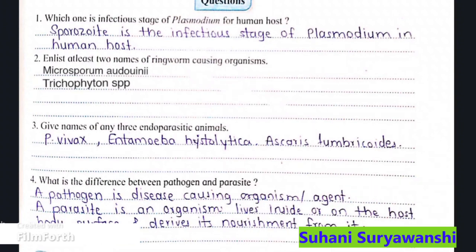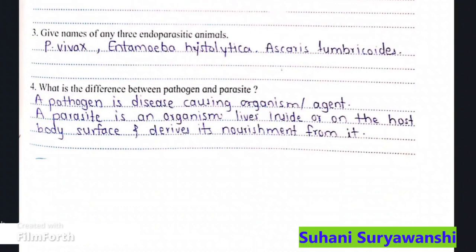Second: give at least two names of ringworm-causing organisms. That is Microsporum audouinii and Trichophyton SPP.